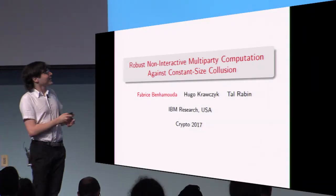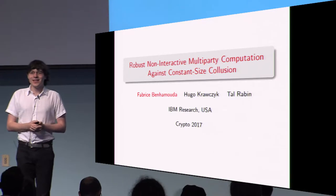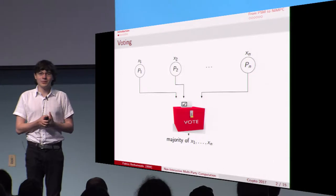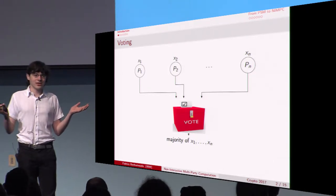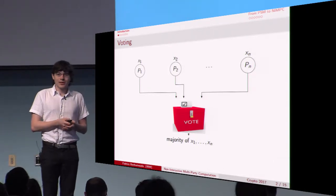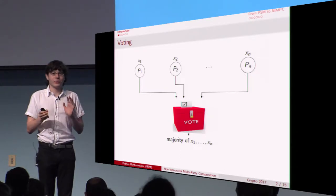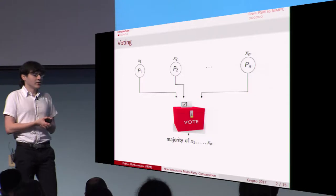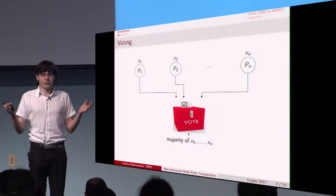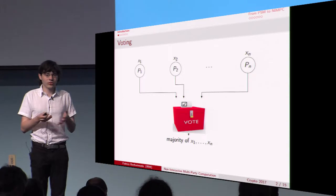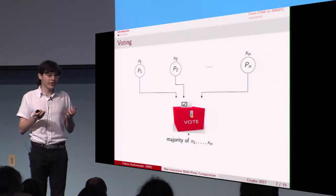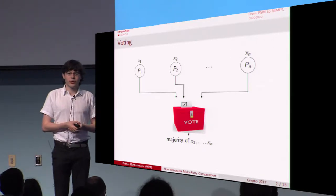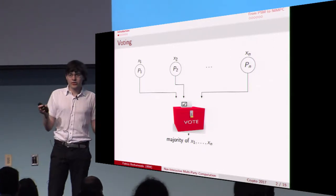Thank you for the introduction. Let's start with an example: voting. You have n parties p1 through pn who want to vote electronically. Each party pi has a vote xi — think of xi as a bit, 0 for no, 1 for yes. Each party wants to send a single message to an electronic ballot box or a server called an evaluator, which should then compute the result of the vote, namely the majority of all the inputs.